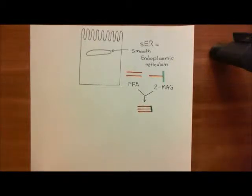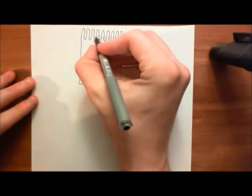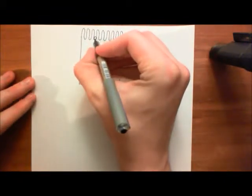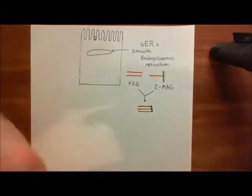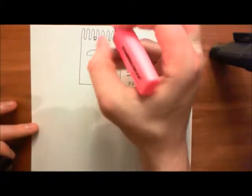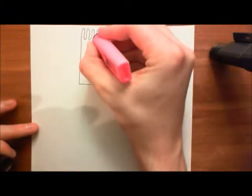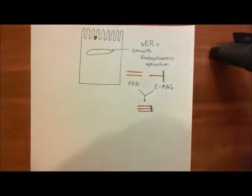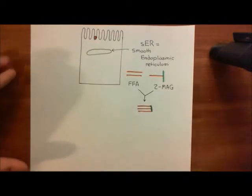What has happened so far is these mixed micelles have come to the enterocytes. They've gone down amongst the microvilli here of an enterocyte, and they have given up their products of digestion, which, remember, are free fatty acids, two monoacylglycerol molecules, lysophosphoglycerolipids, and also free cholesterol molecules.